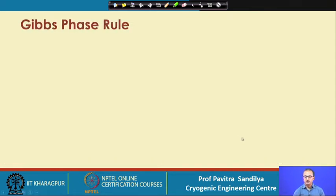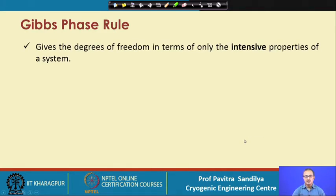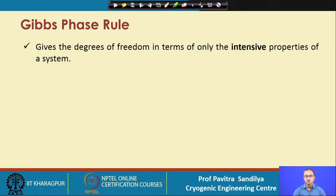Next we come to the Gibbs phase rule. This phase rule is a subset of the degrees of freedom. By degrees of freedom we mean the minimum number of properties that must be prescribed to describe a given system. Any system has many properties with which it may be characterized; however, for practical purposes it is not possible to prescribe the values of all various properties. So it is necessary to know the minimum number of properties that must be prescribed, and the Gibbs phase rule is a special case used to find the degrees of freedom in terms of intensive properties of a system.